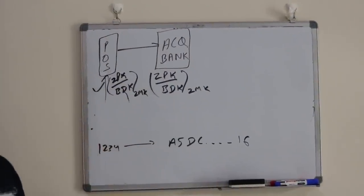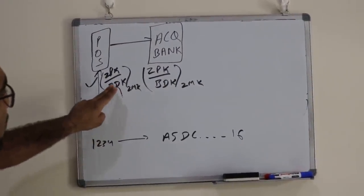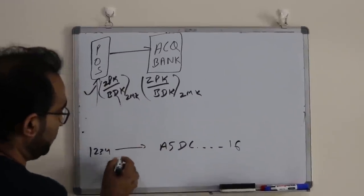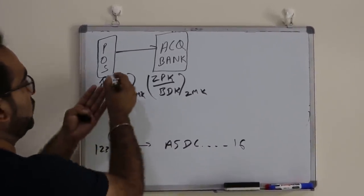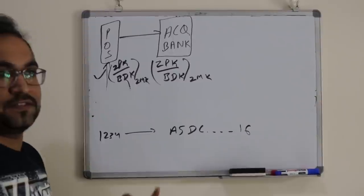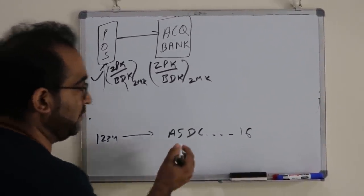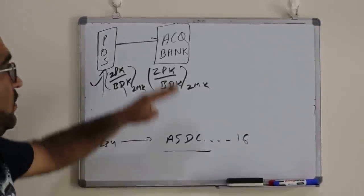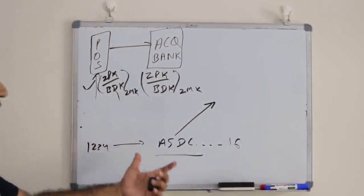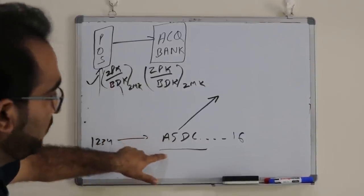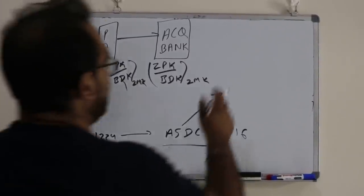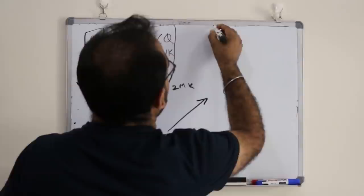The acquiring bank has the same pair of keys exchanged with the POS terminal. The algorithm which the POS application used — based on those keys they would have used some HSM algorithm, a PIN translation algorithm, and produced the PIN block. Now the acquiring bank will also use some algorithm, one of the HSM commands, and will translate this PIN to a new value for the next entity.